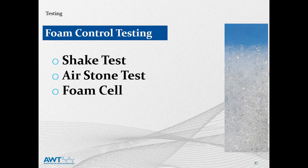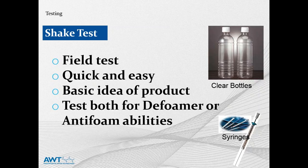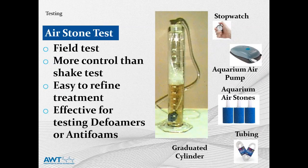Let's talk about testing and what kind of tests we run to find out how these products function. There are three basic tests in our industry: the shake test, the Airstone test, and the foam cell. The shake test is very simple and rudimentary — nothing more than clear bottles, either plastic or glass, samples of the defoamers or antifoams, and the water that needs to be treated. To test as a defoamer, put your water in, shake the bottle to create foam, then add a little defoamer and see if it knocks it down. To test as an antifoam, put the defoamer in first, then fill with water and shake to see if foam occurs. It's a good test to have on hand when you're having a problem and want a quick recommendation or a quick fix.